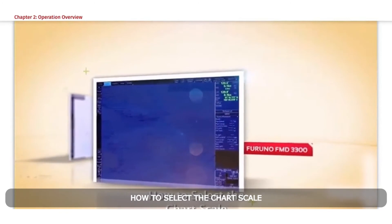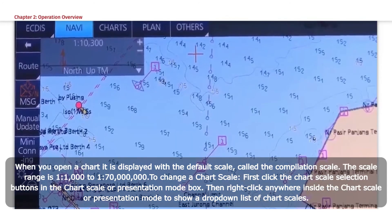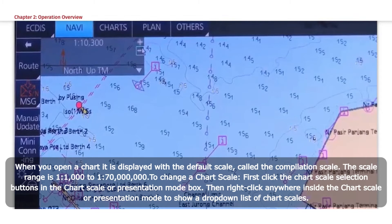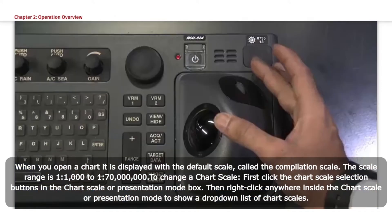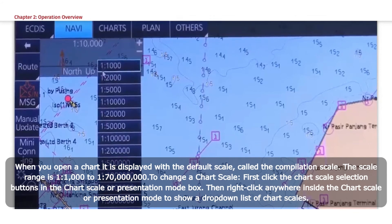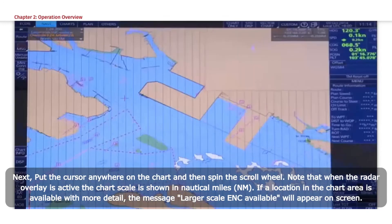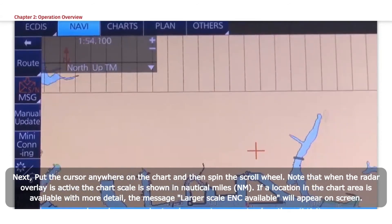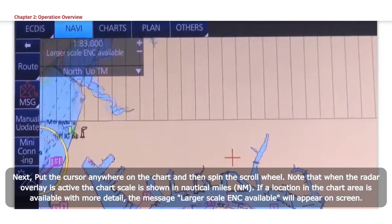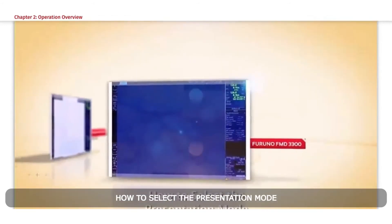How to select the chart scale. When you open a chart, it is displayed with the default scale, called the compilation scale. The scale range is 1:1,000 to 1:70,000,000. To change a chart scale, click the chart scale selection buttons in the chart scale or presentation mode box, or right-click anywhere inside the chart scale or presentation mode box to show a drop-down list of chart scales. Alternatively, put the cursor anywhere on the chart and spin the scroll wheel. When the radar overlay is active, the chart scale is shown in nautical miles. If a location with more detail is available, the message 'larger scale ENC available' will appear on screen.